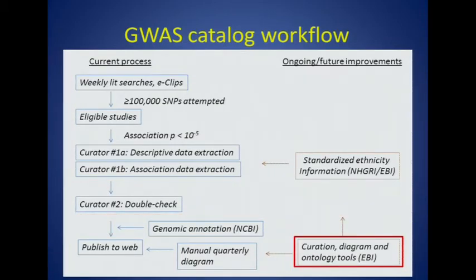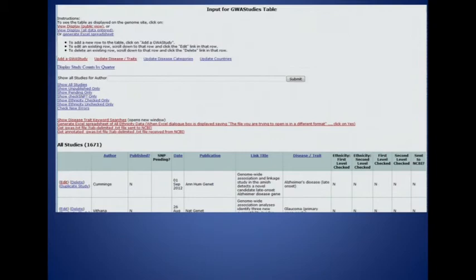Our collaborators at EBI are working on a number of developments related to curation, diagram, and ontology features, and the focus of today's talk is the diagram and ontology features. From a historical perspective, before the catalog was a database it was preceded by an Excel spreadsheet, and even before that a word table, which is sort of why you see the word table up here.